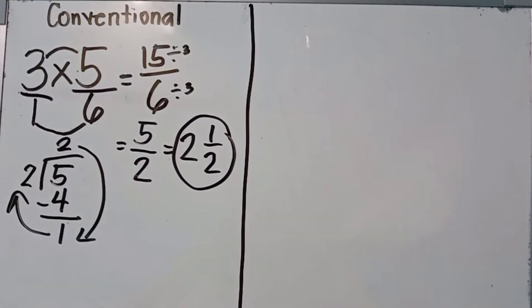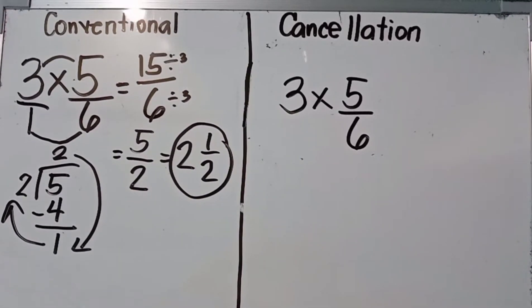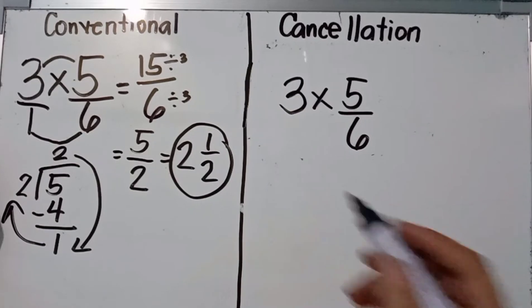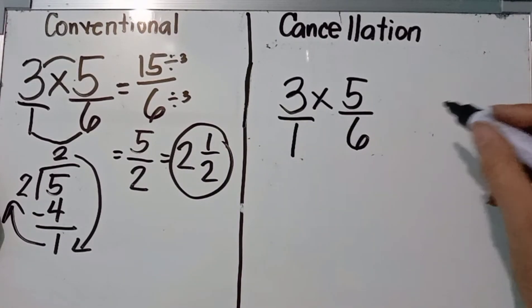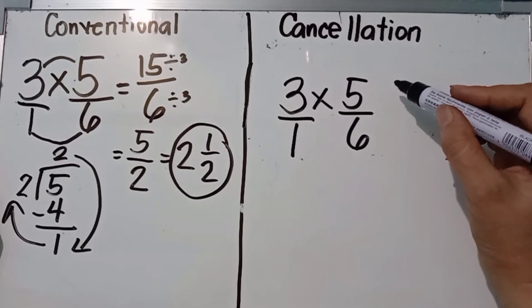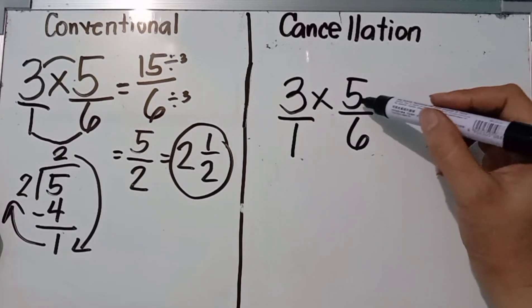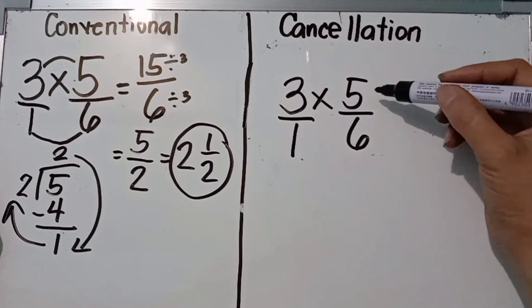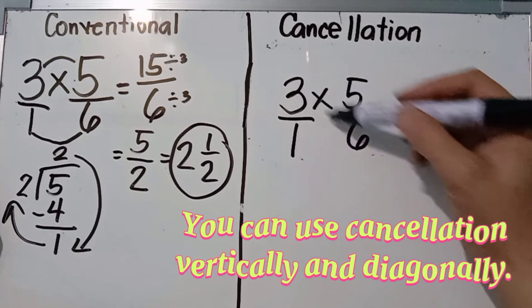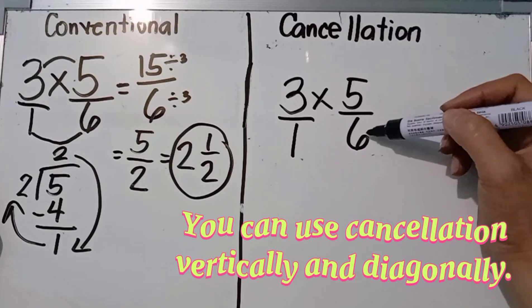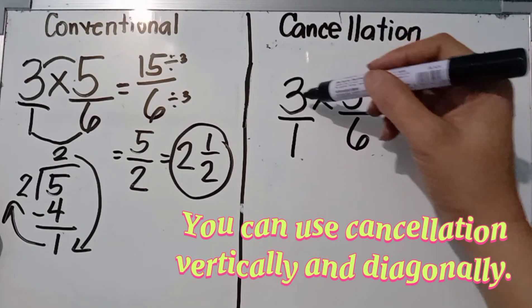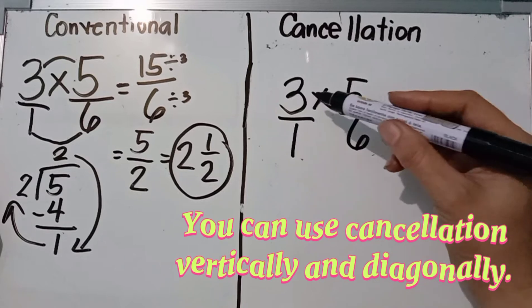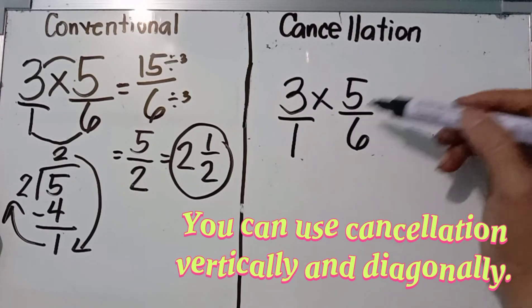Now let's try the same problem using the cancellation method with the same numbers — three over one times five over six. The first step is to find any common factors among the numbers, checking vertically or diagonally. Does three and six have a common factor? Yes, their common factor is three.